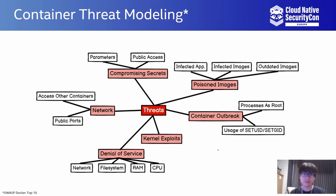These six categories are: kernel exploits, container outbreak, denial of service, and network threats, as well as possibly poisoned images and compromising secrets. It's easy to understand that most of these threats are happening, or can eventually lead to security risks, at the runtime of containers.